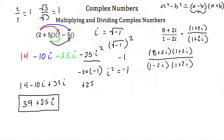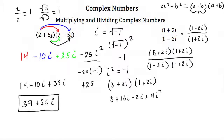Now you have to FOIL out both the numerator and the denominator separately. Starting with the numerator: if I have 8 plus 2i and 1 plus 2i, then 8 times 1 is 8, 8 times 2i is 16i, 2i times 1 is 2i, and 2i times 2i is 4i squared. Remember i squared is always equal to negative 1. So this is 8 plus 16i plus 2i minus 4. Simplifying: 8 minus 4 is 4, and 16i plus 2i is 18i. So the numerator is 4 plus 18i.